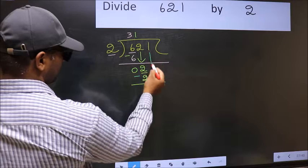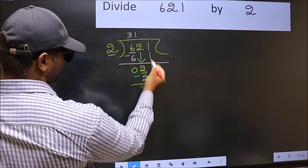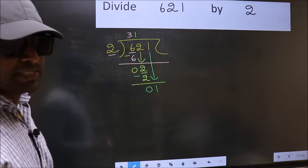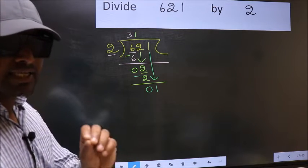After this, bring down the beside number. So 1 down. After this step, the mistake happens. And the mistake is this.